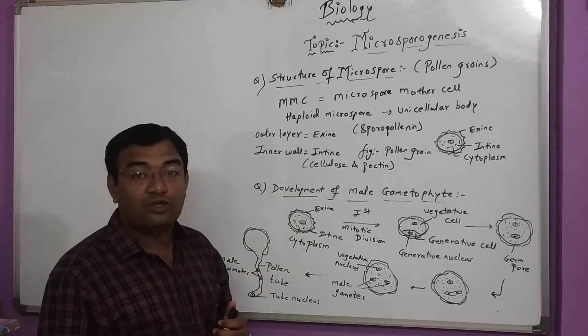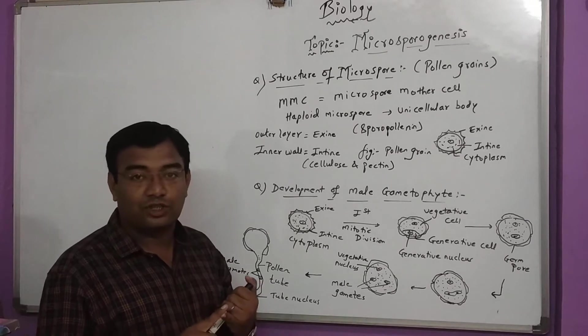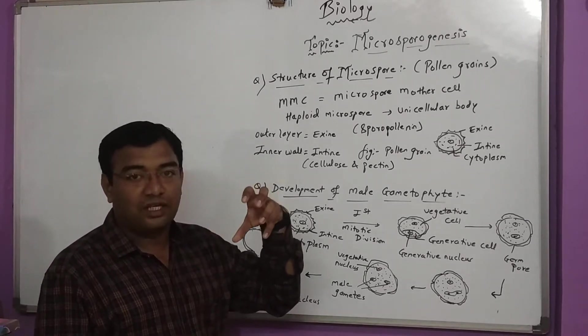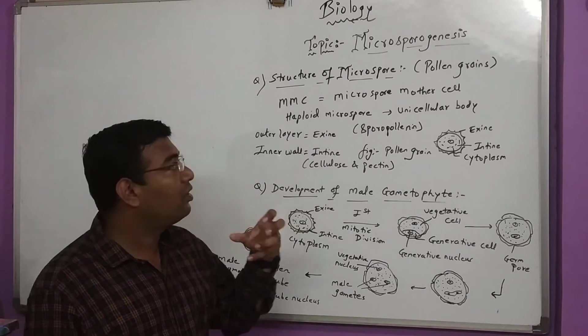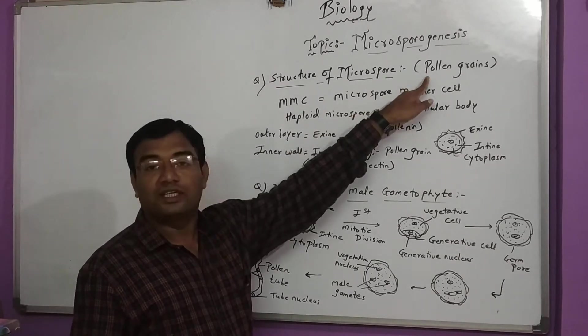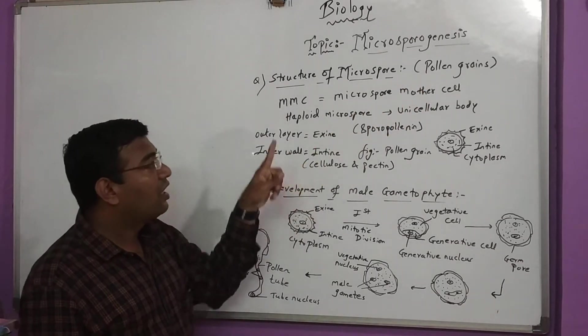The male part of the flower includes the androecium, anthers, stamen, and pollen sac. What are pollen grains? We are going to study about pollen grains today.